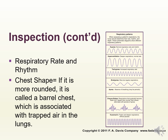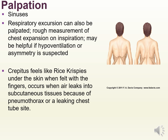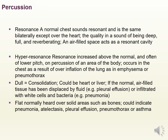Be sure to palpate — you can palpate at the sinuses. Respiratory excursion can also be palpated as a measurement of chest expansion on inspiration, helpful if hypoventilation or asymmetry is suspected. Check for crepitus, which feels like rice crispies or bubble wrap under the skin — this can occur when air leaks into subcutaneous tissue from a pneumothorax or a leaking chest tube. Percussion: resonance is a normal chest sound heard over lung fields — a deep, full, reverberating sound. Air-filled spaces act as resonant cavities.